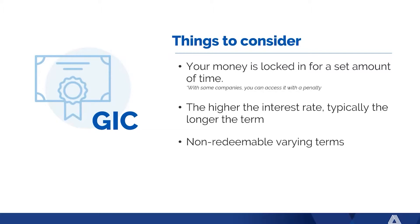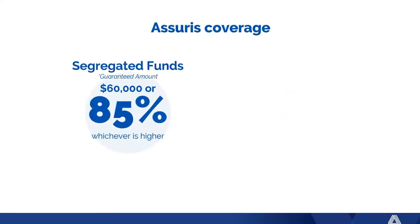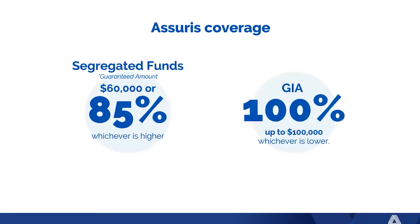There is Assurist coverage on the segregated fund side — $60,000 or 85%, whichever is higher. On the GIA, it's 100%, with a maximum of $100,000. It does vary depending on account type — sole owner or joint account. All this information can be found on the Assurist website. Most of you likely have your LLQP, so you're used to the Assurist coverage from the life insurance side.